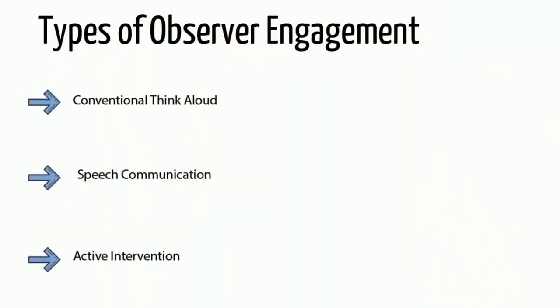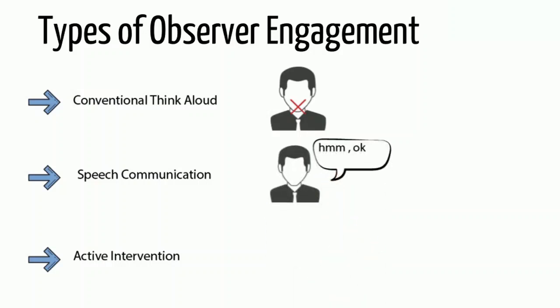There are three ways in which the researcher can act towards the participant: Conventional Think Aloud, Speech Communication, and Active Intervention. In conventional think aloud, the observer does not say anything. In speech communication, the observer responds with filler sounds, whereas in active intervention, the observer intervenes if the participant gets stuck.